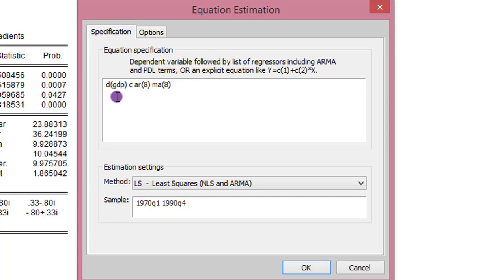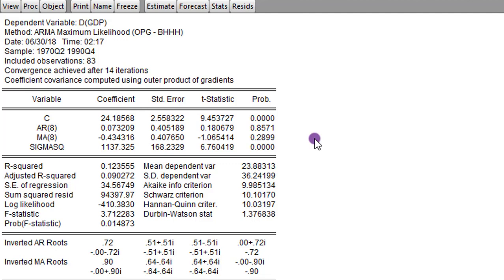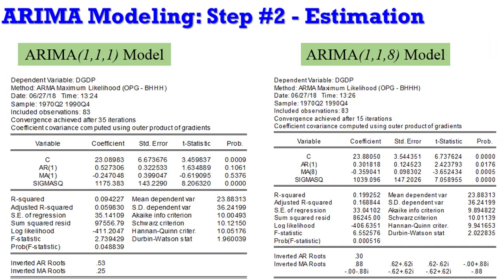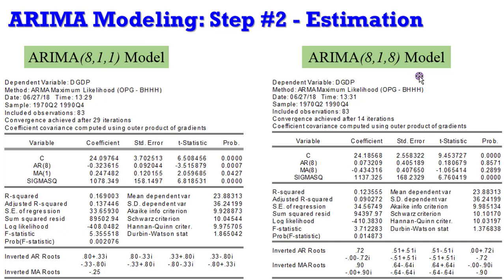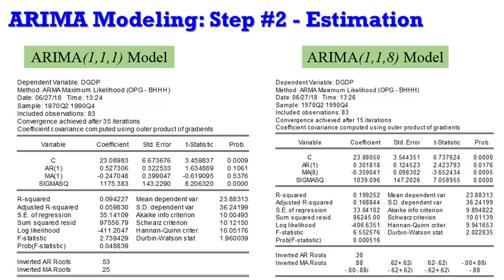So now we have estimated all four models. How do we decide the most appropriate? I have moved all results to PowerPoint with annotations to make explanations clearer. The criteria for choosing the most appropriate model are: the model with the most significant coefficients, and the model with the least volatility.